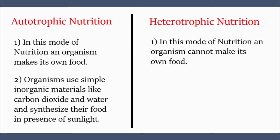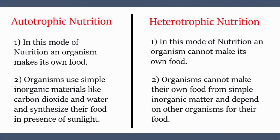Second point: in autotrophic nutrition, organisms use simple inorganic materials like carbon dioxide and water and synthesize their food in the presence of sunlight. In heterotrophic nutrition, organisms cannot make their own food from simple inorganic matter and depend on other organisms for their food.